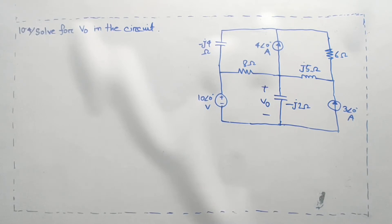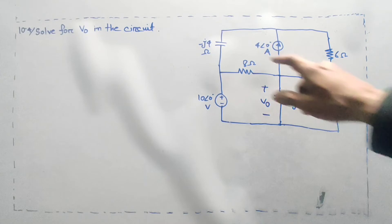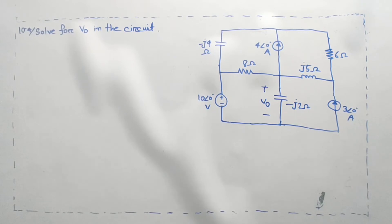We are going to cover the mesh with the mesh. This is the mesh with the mesh and the mesh current source. We are going to cover the super mesh. If you are going to cover the mesh, this is actually a super mesh.